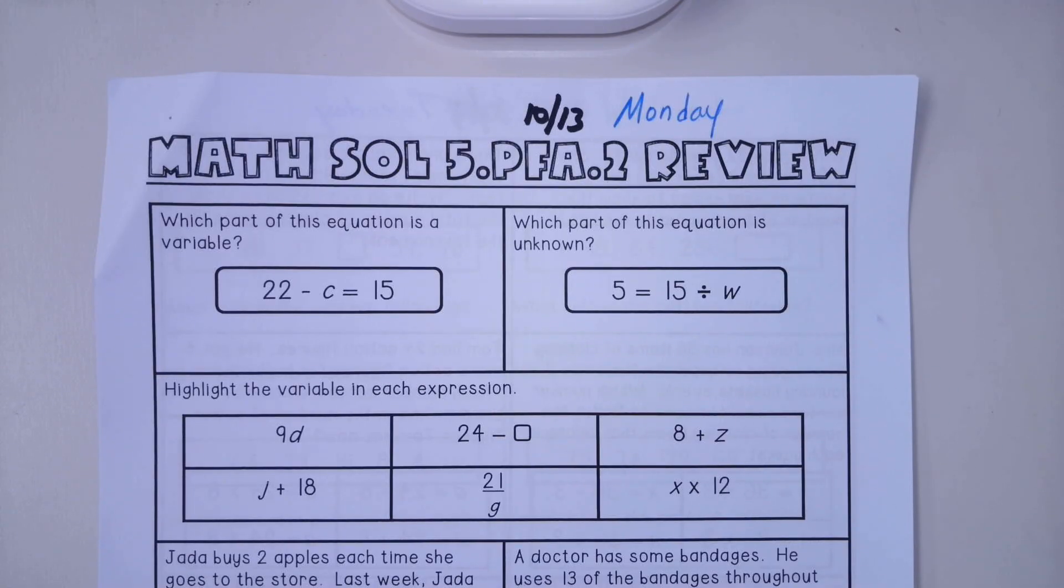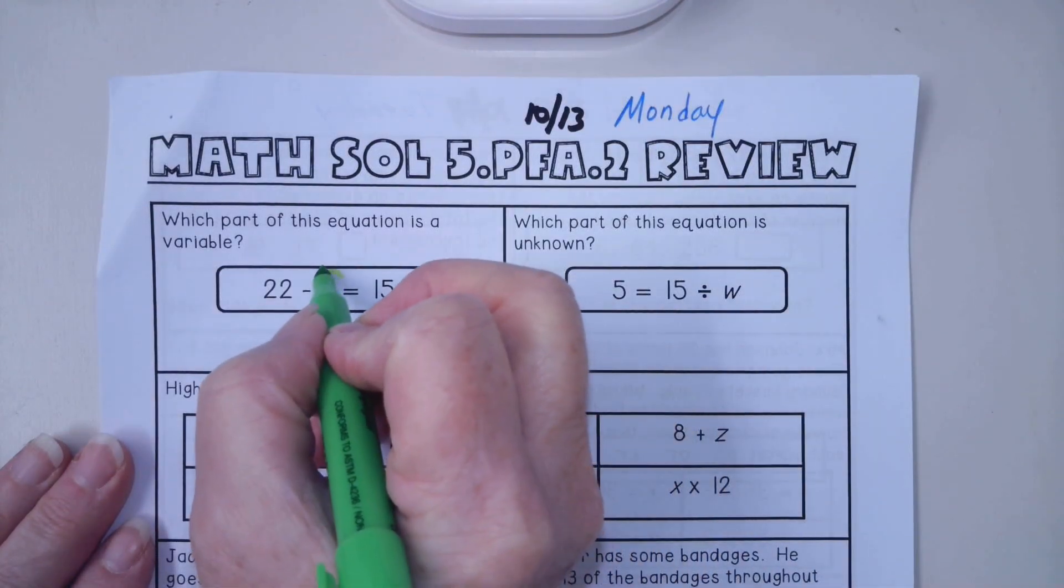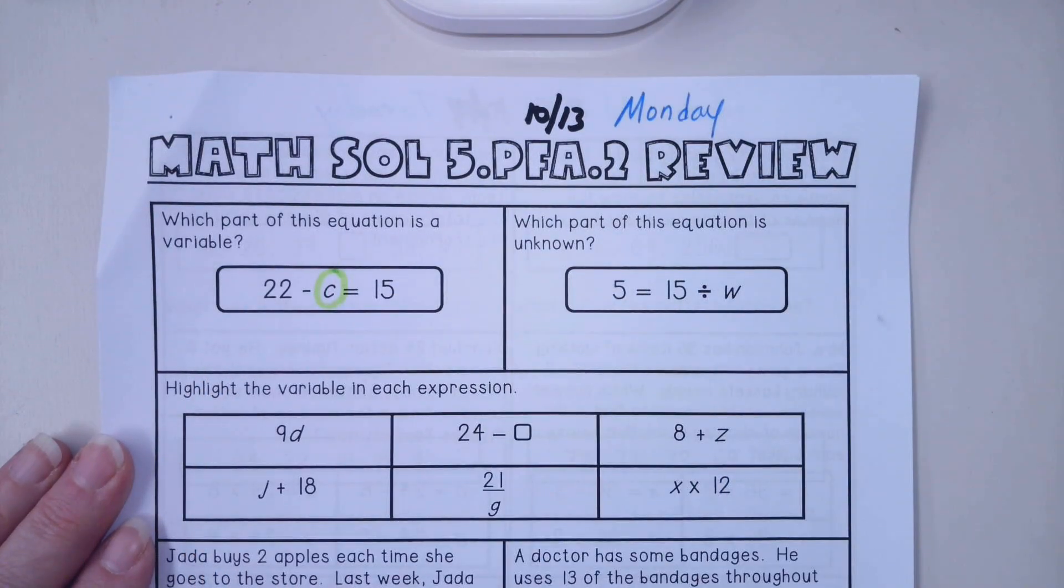Part one or question one says, what part of this equation is a variable? And what we have learned so far is that a variable is written as a letter, and usually it's a lowercase letter. So C is our variable.